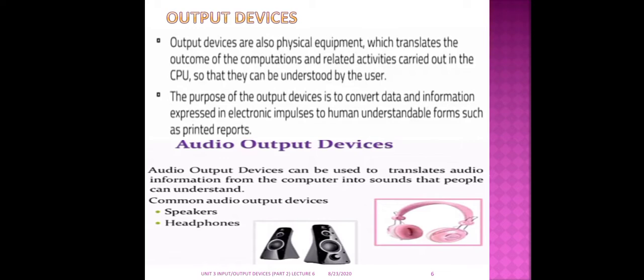Output devices translate the outcome — the result which is processed in the CPU — into a form that can be understood by the user. The purpose of output devices is to convert data and information into electronic impulses into a human-understandable form, such as printed reports. Other output devices are speakers and headphones, which are audio output devices.